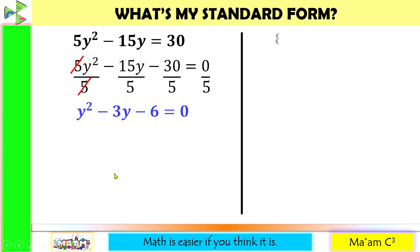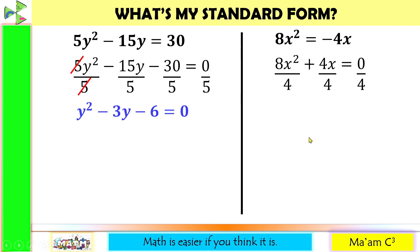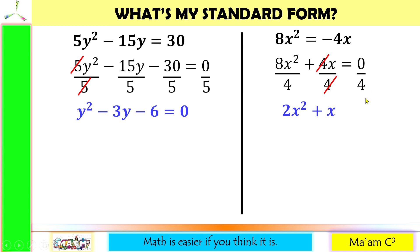Let us have another one: 8x squared equals negative 4x. First, let us move the linear term to this side — it will become positive — then equate to 0. Since 8 and 4 are both divisible by 4, let us divide everything by 4. 8 divided by 4 is 2, so we have 2x squared. The 4's cancel leaving just x, and 0 divided by 4 is still 0.